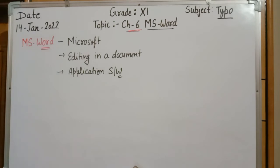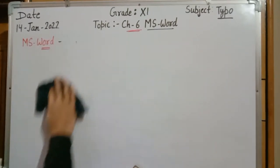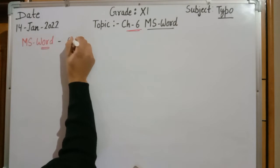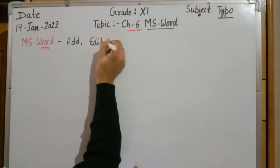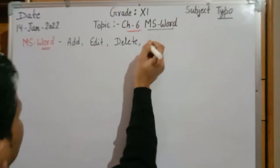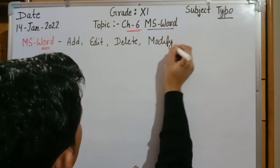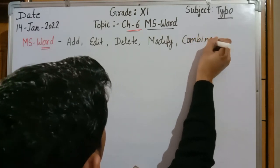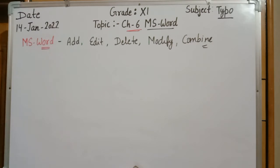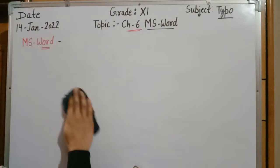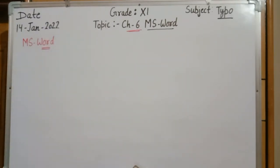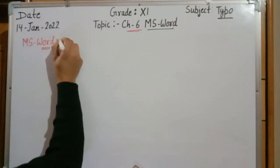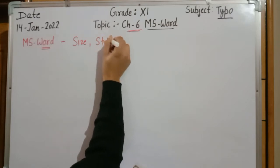MS Word helps provide functionality to type or edit in a specific document. The types of editing we can perform include: we can add some data, we can delete some data, we can modify data, or we can combine multiple files. All these things are possible in MS Word. Formatting a document means changing the structure of the document. Format documents provide the appearance of the document, which can be adjusted in terms of text size, text style, and color.